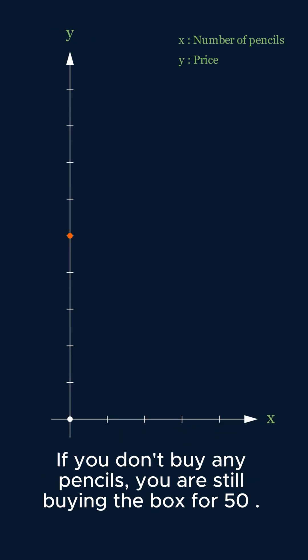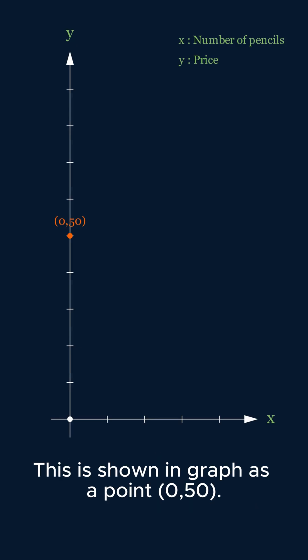If you don't buy any pencils, you are still buying the box for 50. This is shown in the graph as point (0, 50).